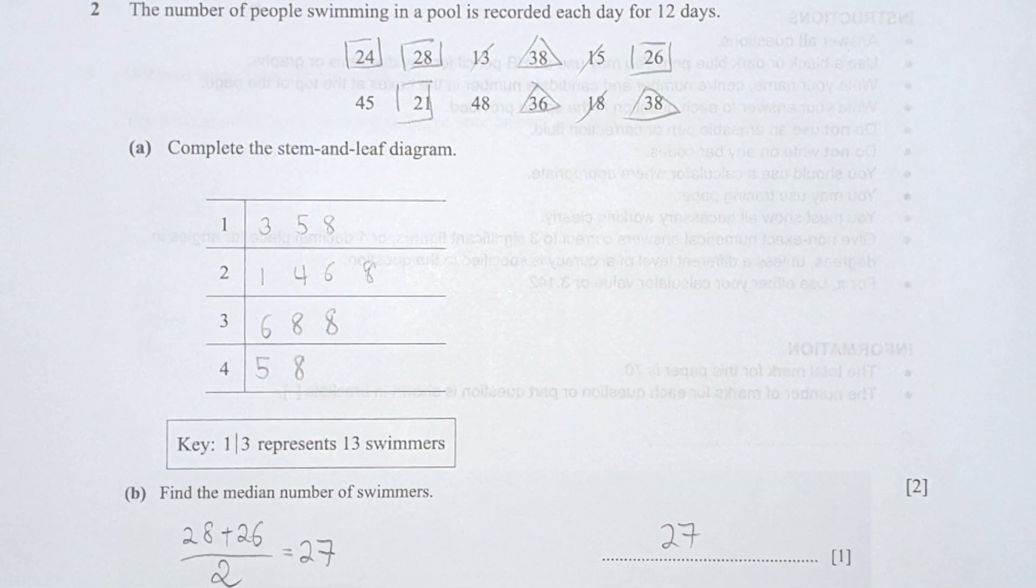For part 2, complete the stem-and-leaf diagram. For the first one, 1, you will have 3, 5, 8.